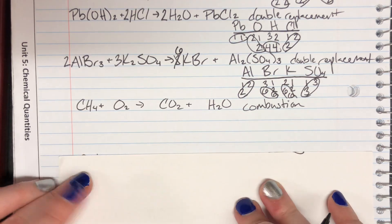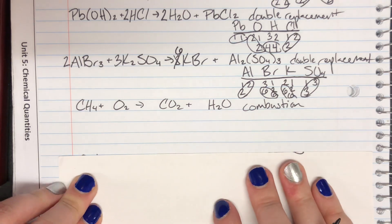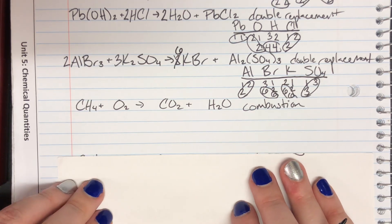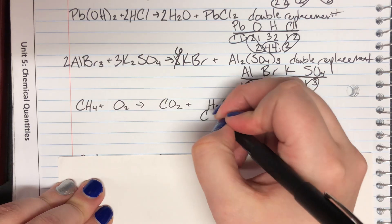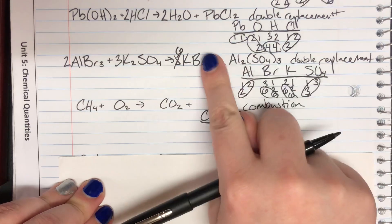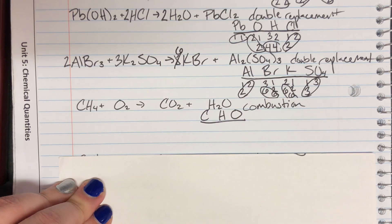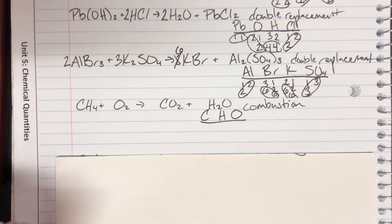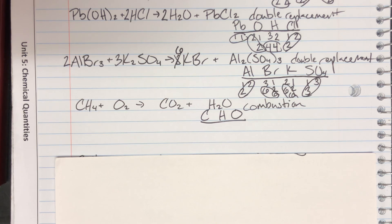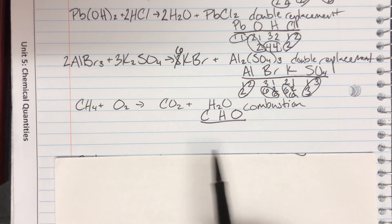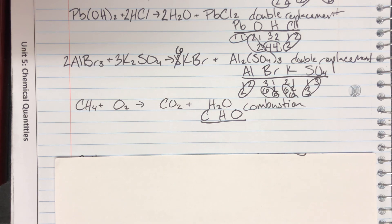My next equation is a combustion reaction. Combustion equations are particularly difficult to balance, so just like a puzzle, you'll eventually find the correct answer. Combustions are notorious for making you go back and readjust repeatedly. So if you see CHO as your listed elements for balancing, just buckle in and get ready. We're going to go ahead and attempt this one.